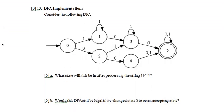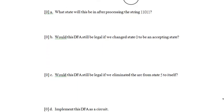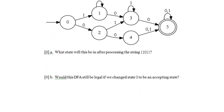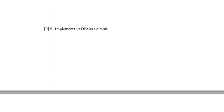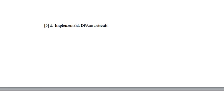DFA implementation - that sounds like a circuit, and those things take forever, so right away I'm thinking I might leave this until later depending on how many marks it's worth. Given the DFA, what state will it be in after tracing a certain string? That'll be easy - I'll just trace through. Would the DFA still be legal if we changed state zero to be an accepting state? Easy - I'll answer that. Would it still be legal if we eliminated the arc from state five to itself? I can answer that too. But implementing the DFA as a circuit will take a while, so I might skip part D and come back to it after doing A, B, and C.